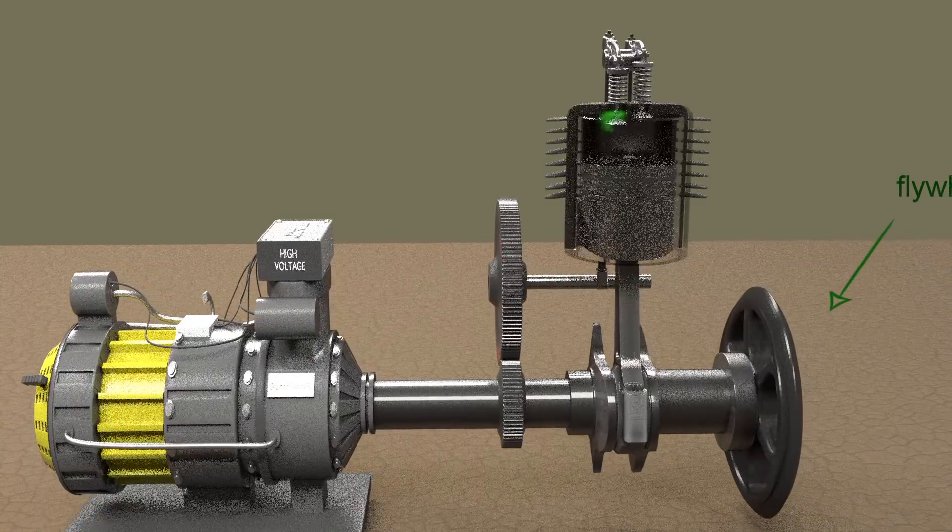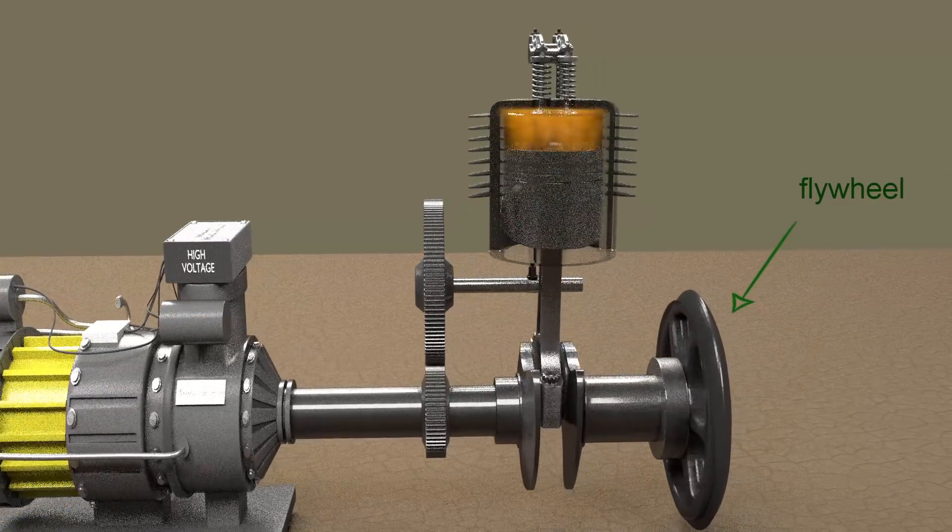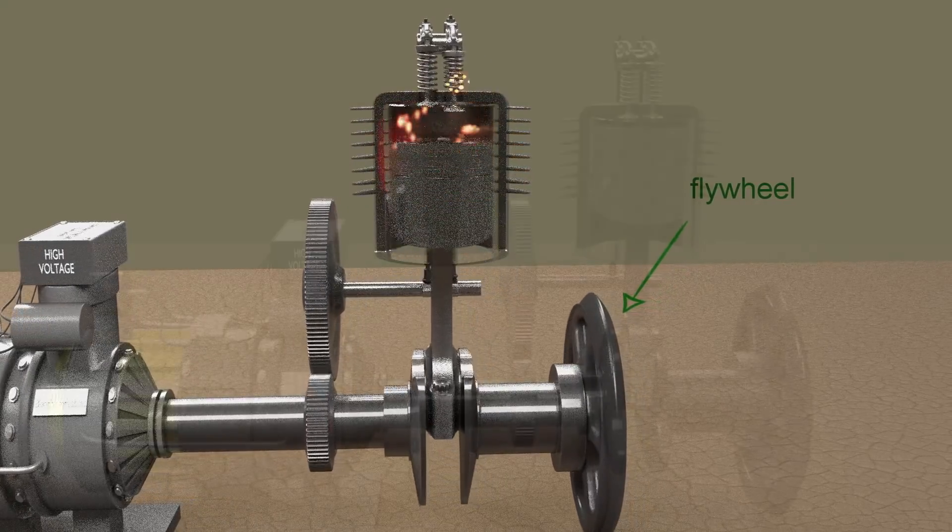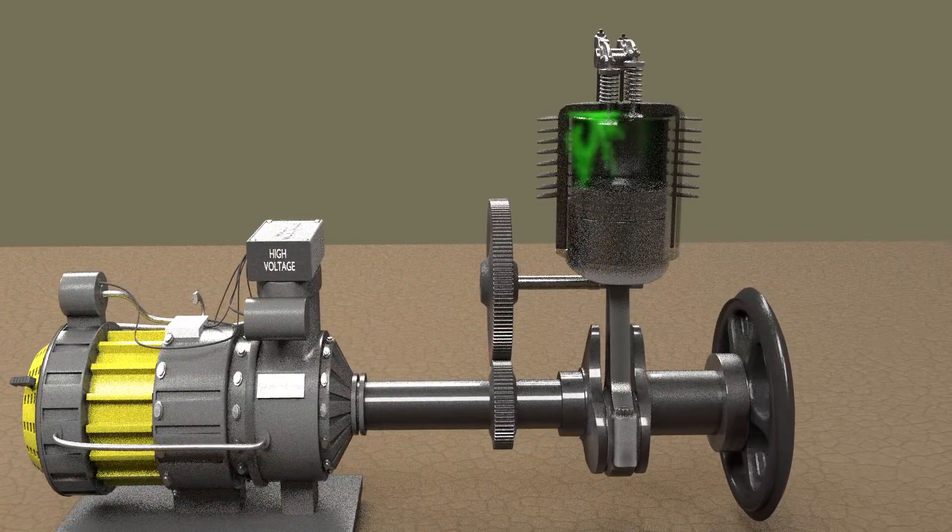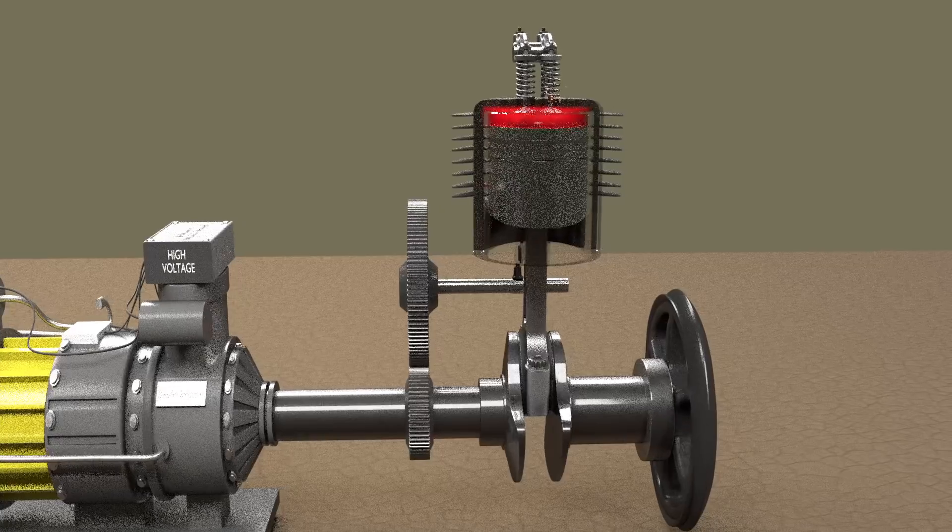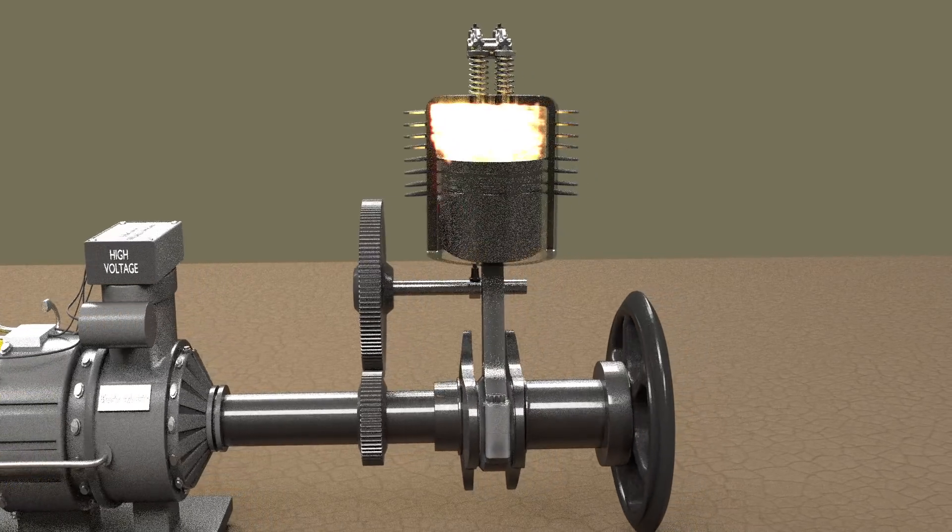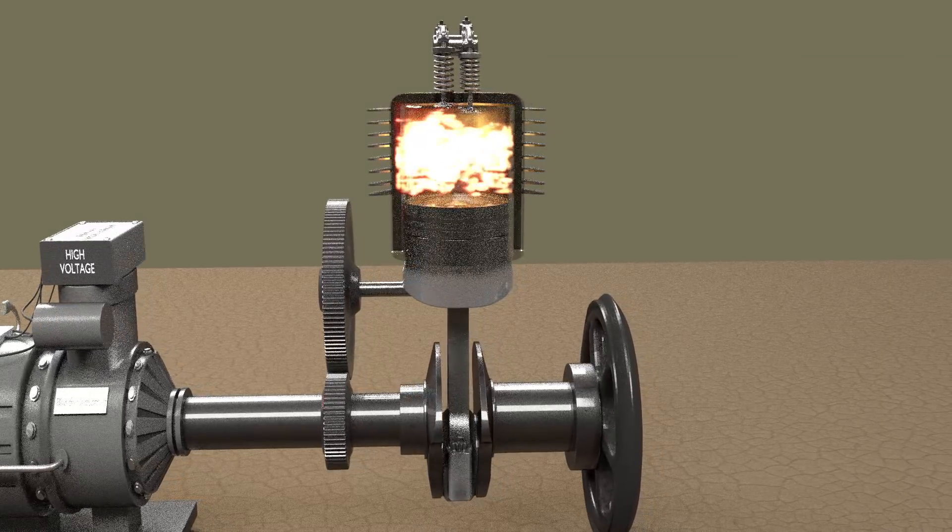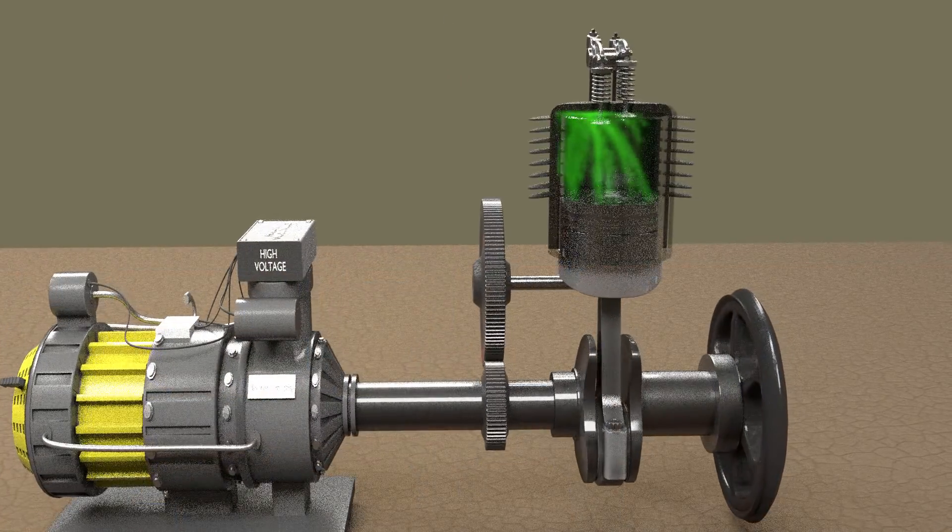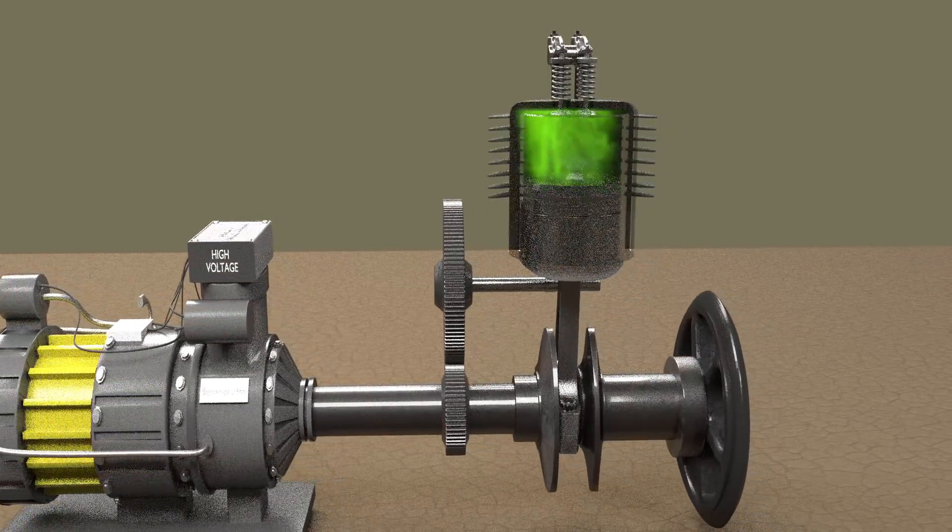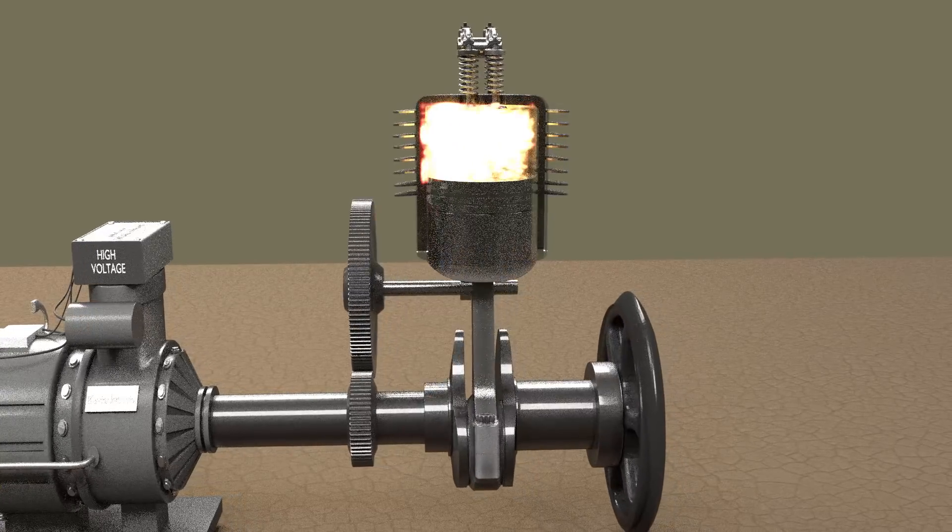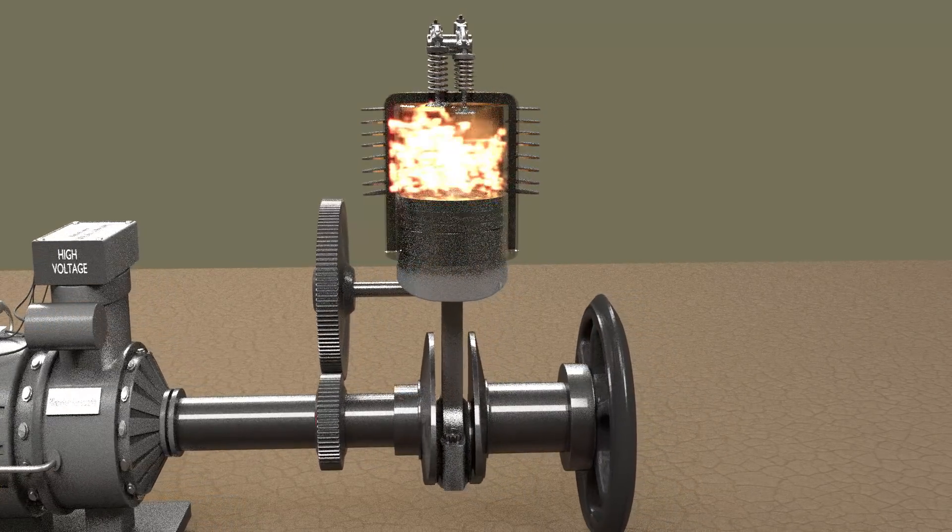A flywheel is connected to limit this fluctuation of speed. A flywheel is a wheel with high moment of inertia which means more energy is required to increase or decrease its rotational speed or in other words to accelerate or decelerate it. When excess energy is developed by engine during power stroke, the excess energy is stored in flywheel with overall smaller acceleration. And when energy is required by engine during compression and other strokes, the energy is provided by flywheel by decelerating itself by small amount. Thus flywheel reduces the fluctuation of speed of engine.